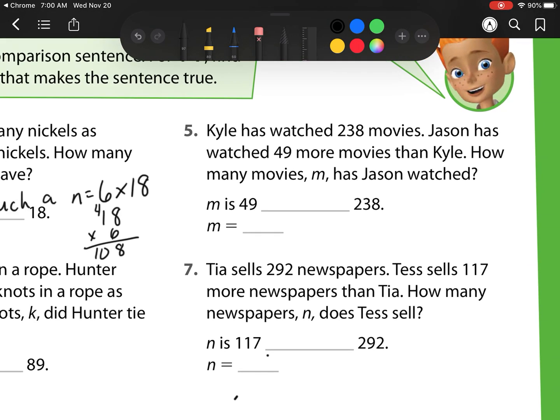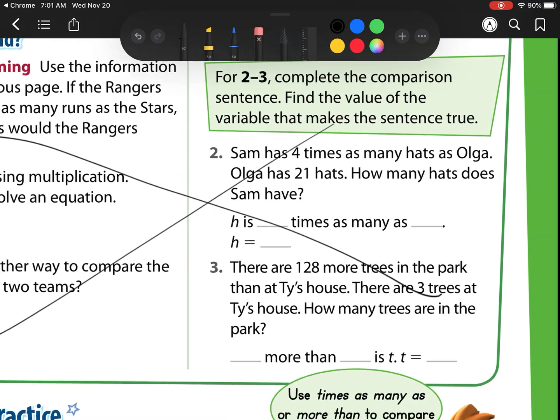On to number 5. Kyle has watched 238 movies. Jason has watched 49 more movies than Kyle. How many movies M has Jason watched? We know that Jason has watched more, so this mystery number M needs to be larger. So that's an addition problem. M is 49 more than 238. So I have 238 plus 49. And so when I regroup that, I have 287. So he has 287 movies.